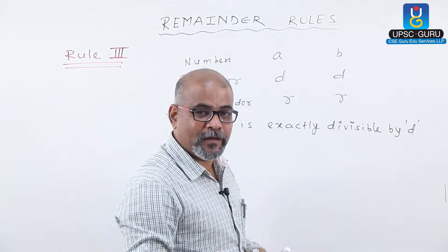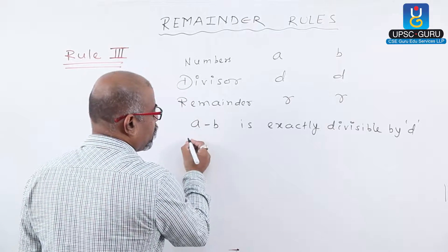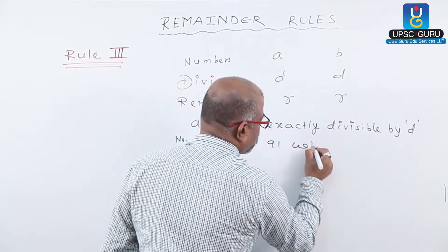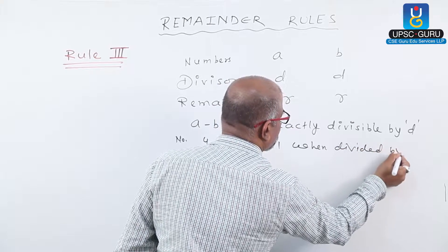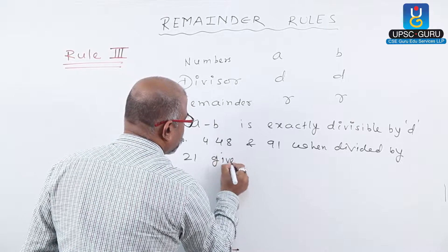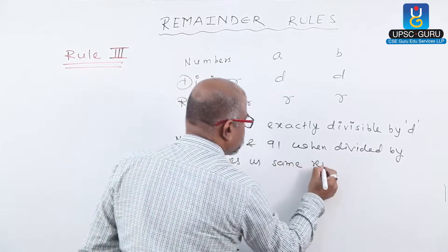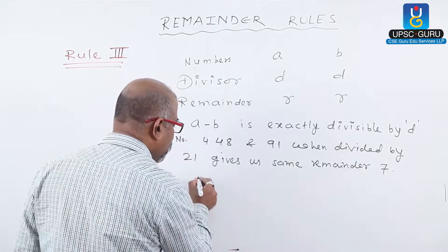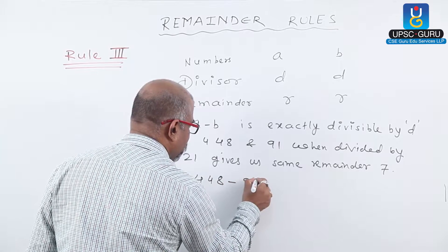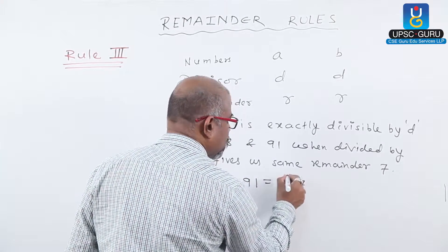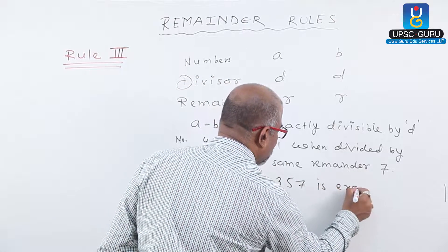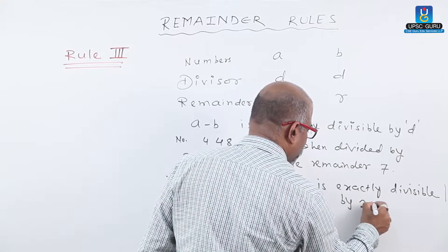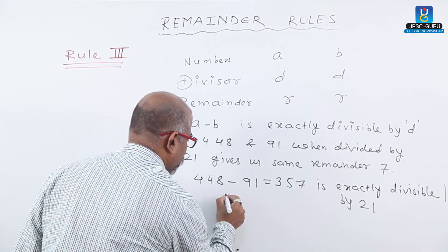Let us check one example on this, application on this. Number four, forty-eight and ninety-one when divided by twenty-one gives us same remainder seven. Therefore, we can say that four forty-eight minus ninety-one, that is three fifty-seven, is exactly divisible by twenty-one. Let us check whether it is divisible by twenty-one or not.